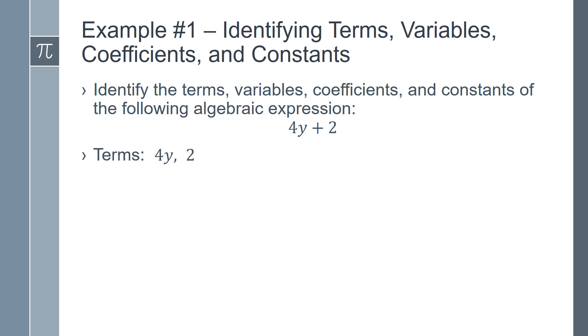Next we'll go with the variables. Those are letters or other symbols that stand for numbers. So in this case the variable is y. Next up comes the coefficient, which are the numbers multiplied by the variables. In this case we have one coefficient, which is 4. And finally the constants. Constants are any terms with only a number. In this case the constant is 2.